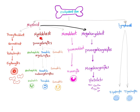What about myeloblast? Myeloblast will produce promyelocytes, and that will differentiate into three different types: neutrophilic myelocytes, basophilic myelocytes, and eosinophilic myelocytes. Each of them will then change into neutrophilic metamyelocytes, basophilic metamyelocytes, and eosinophilic metamyelocytes, and finally into the mature cells: neutrophils, basophils, and eosinophils.